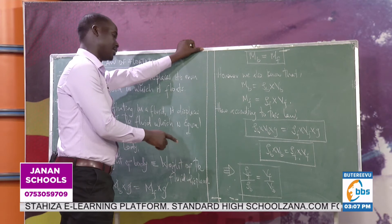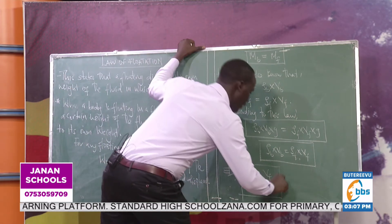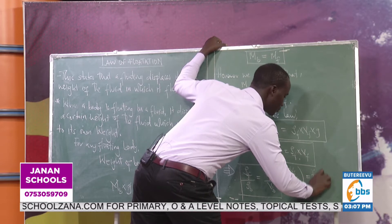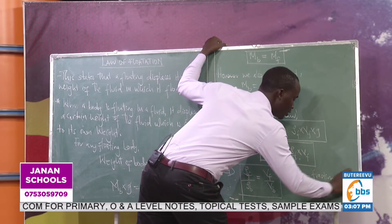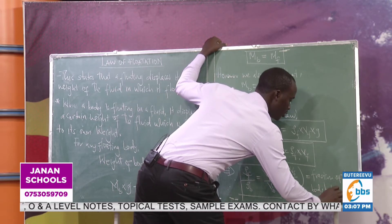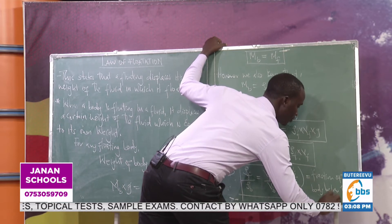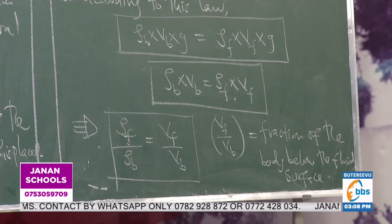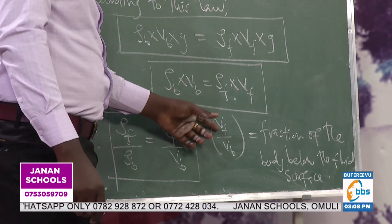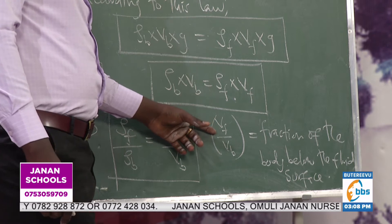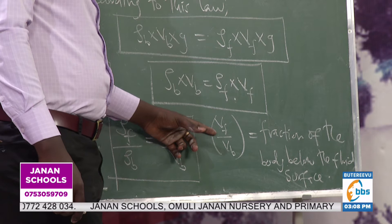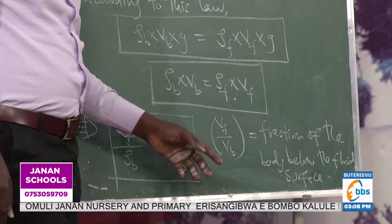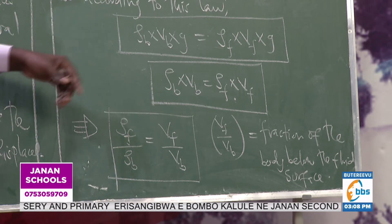Now, when the law is stated mathematically like that, the volume of the fluid displaced divided by the volume of the body equals the fraction of the body below the fluid surface — or what we sometimes call the fraction of the body that is submerged. We know that the volume of the fluid displaced is equivalent to the volume of that part of the body which is below the water surface. If I divide that by the entire volume of the body, then this is the fraction of the volume of the body that is below the water surface.